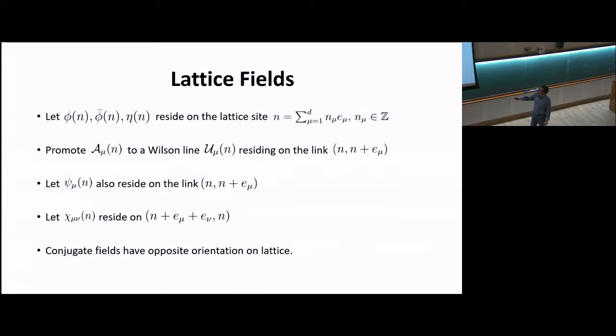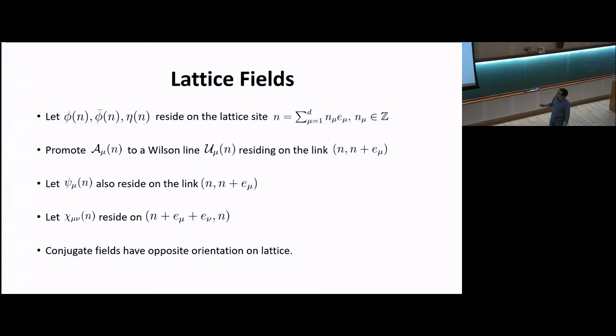How do you define the lattice fields? The scalars phi, phi-bar, and the fermionic scalar eta reside on lattice sites, where n_mu are integers on some abstract lattice — what the computer would see — and n without an index is some linear combination of lattice basis vectors representing a point in a spacetime lattice. We promote the gauge field A_mu to a Wilson line living on a link running along the mu direction. Psi_mu is promoted to a link variable, and chi_mu_nu is promoted to a link variable pointing in the e_mu plus e_nu diagonal direction. Complex conjugates are similar but with opposite orientation.